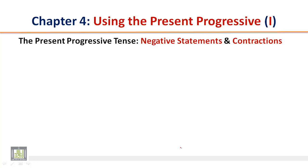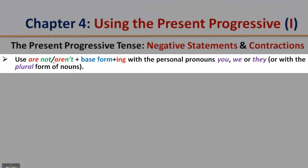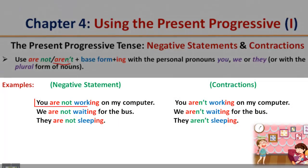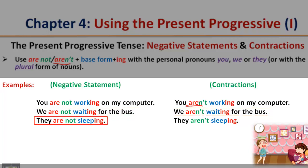The present progressive tense: negative statements and contractions. Use are not or aren't (contraction) plus base form plus -ing with the personal pronouns you, we, or they, or with the plural form of nouns. Examples — Negative statement: You are not working on my computer. Contraction: You aren't working on my computer. Negative statement: We are not waiting for the bus. Contraction: We aren't waiting for the bus. Negative statement: They are not sleeping. Contraction: They aren't sleeping.